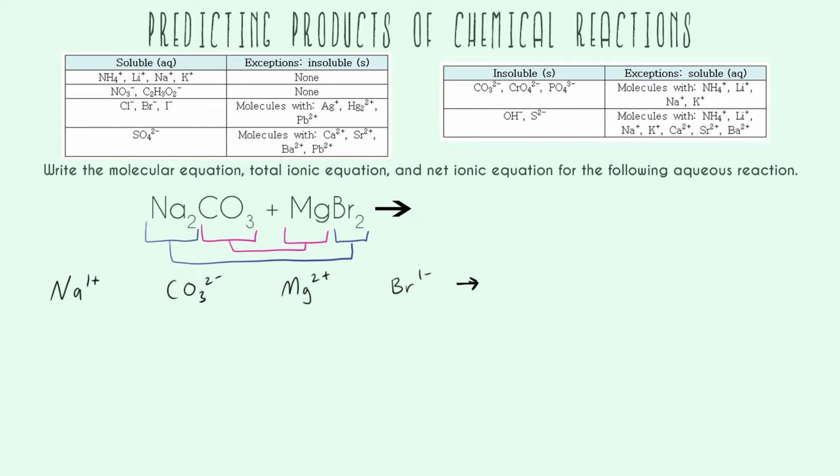We have to put our positive magnesium with our carbonate that's negative and our positive sodium with our bromine that's negative. We can't put the bromine and the carbonate together. They're going to be repulsed by each other. We can't put the sodium and the magnesium together. They're both positive. They're going to be repulsed by each other.